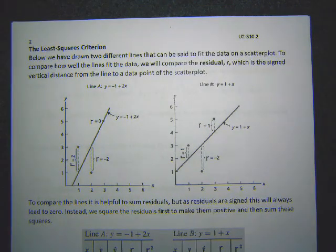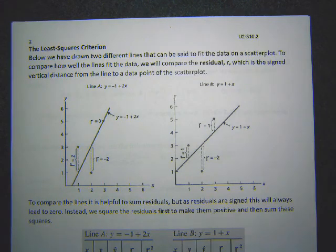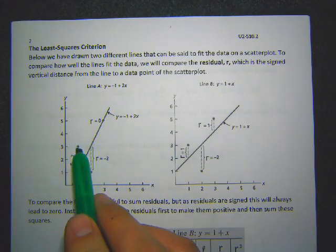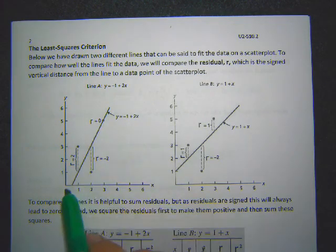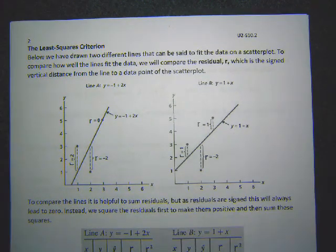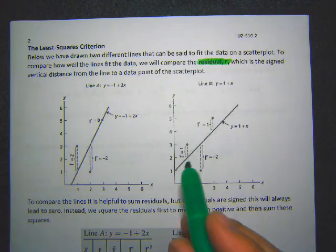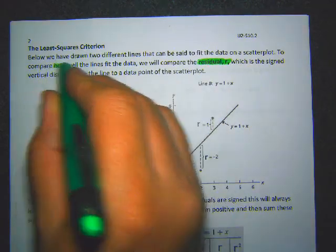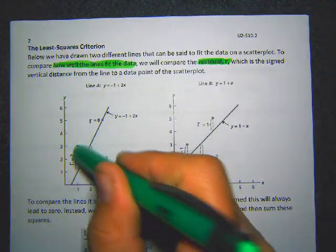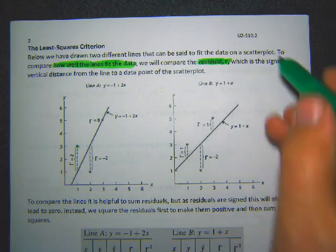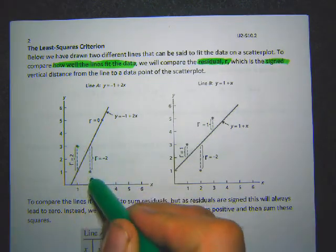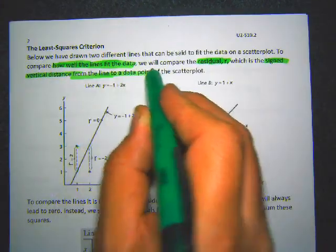To make a line of best fit, we need a way to measure how good the fit is. We look at how the data points on the graph compare to the line — there's usually some vertical distance between the dots and the line. We call that distance the residual. A residual is the signed vertical distance from the line to the data point: positive if above the line, negative if below.